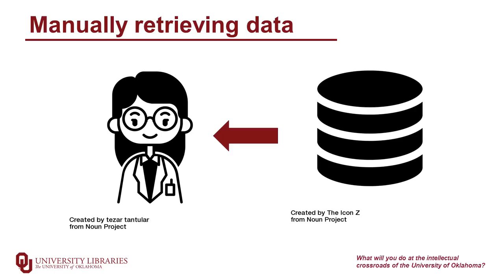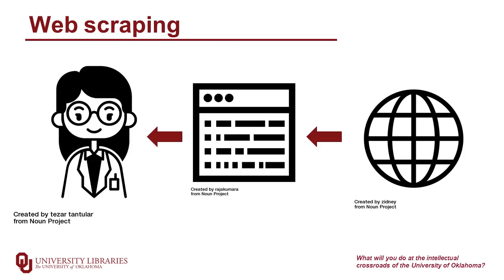Let's talk about what it means to automate retrieving data. Normally, if you get a single data file from a website, you might click a download link, tell the computer where to save the file, and then load the file into your analysis program. In the next two videos, we're going to cover two types of automated data retrieval.